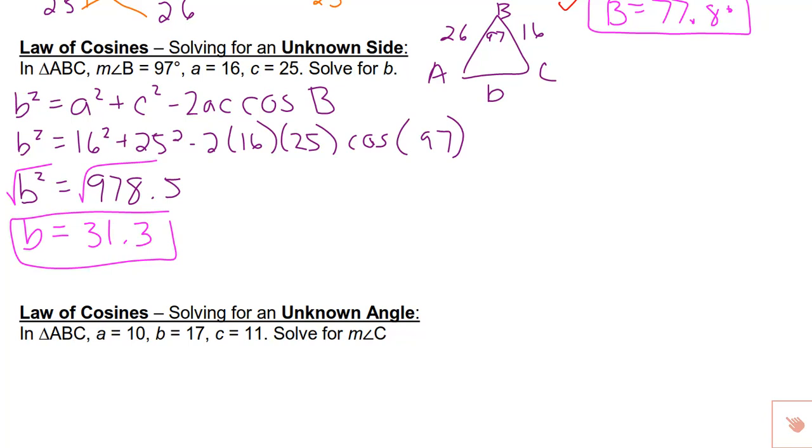Just like with the law of sines, think about, does that make sense? In this triangle, B will be the biggest angle, so it makes sense that side b will be the biggest side. So this is logical. It's also within the range of the other numbers. It's not way off.